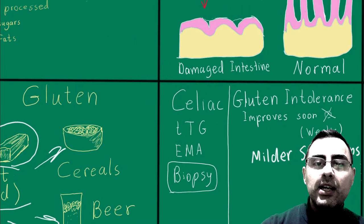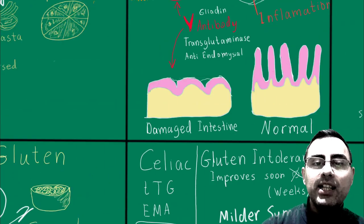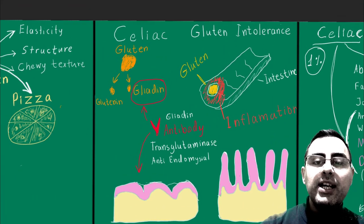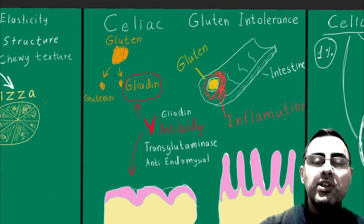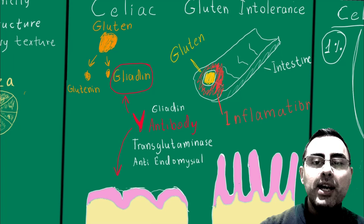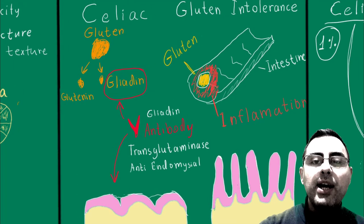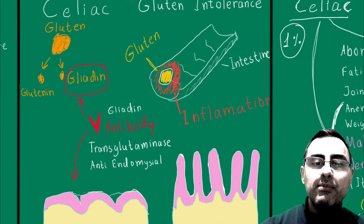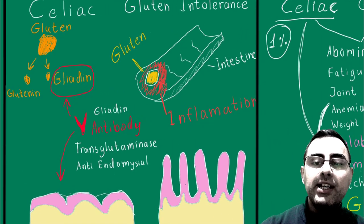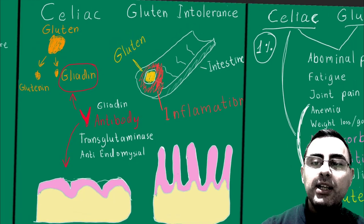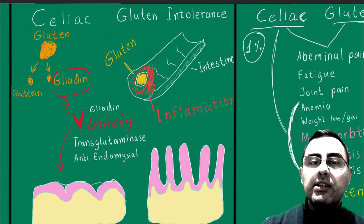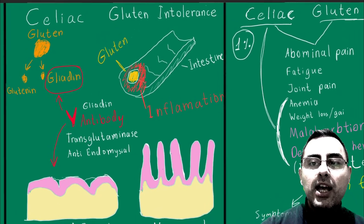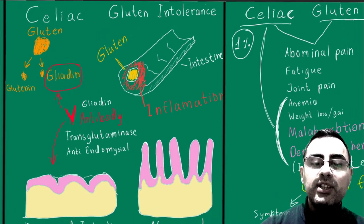So, what is happening? What is the mechanism? Why can gluten cause abdominal pain? Why can gluten cause much more severe symptoms like anemia, malabsorption, and serious diseases?